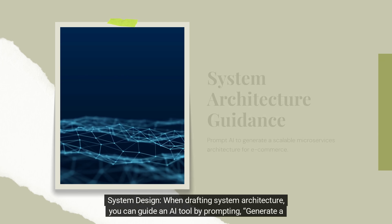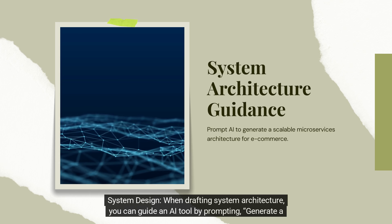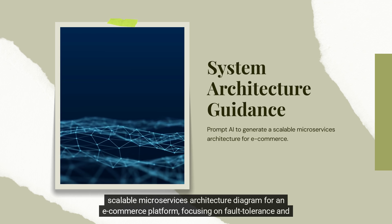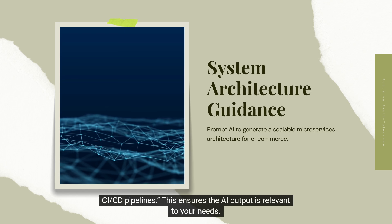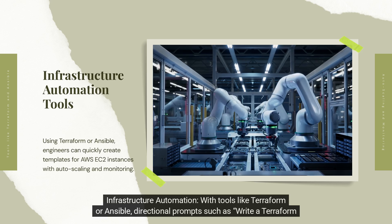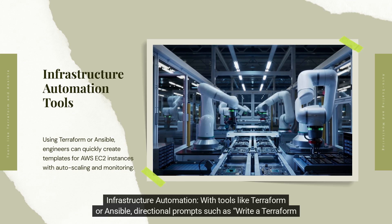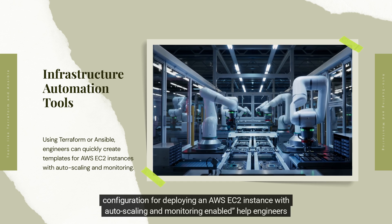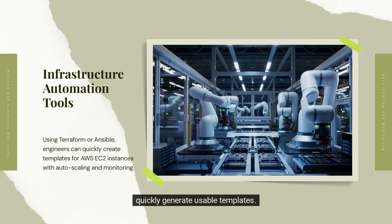For system design, you can guide an AI tool by prompting: 'Generate a scalable microservices architecture diagram for an e-commerce platform, focusing on fault tolerance and CI/CD pipelines.' This ensures the output is relevant to your needs. For infrastructure automation with tools like Terraform or Ansible, directional prompts such as 'Write a Terraform configuration for deploying an AWS EC2 instance with auto-scaling and monitoring enabled' help engineers quickly generate usable templates.